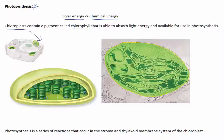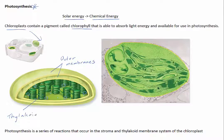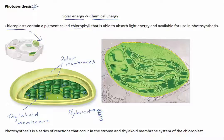Chloroplasts have two outer membranes surrounding the organelle. There is a third inner membrane called the thylakoid membrane that forms long folds within the organelle. The thylakoid membranes look like stacks of coins, although the compartments they form are connected like a maze of chambers. The individual coins are called thylakoids, and the stacks of coins are called grana, or granum for singular. The green pigment, chlorophyll, is located within the thylakoid membrane. The space between the thylakoid membrane and the chloroplast membranes is called the stroma.